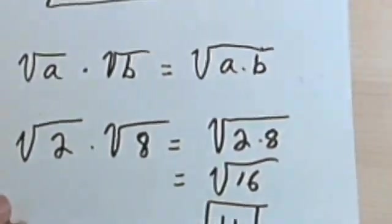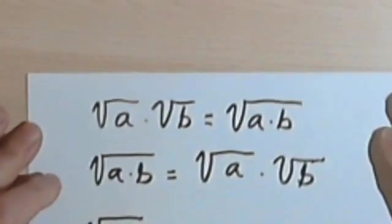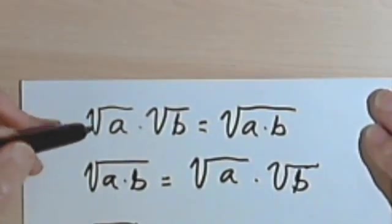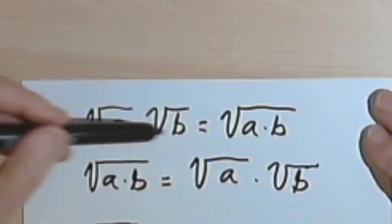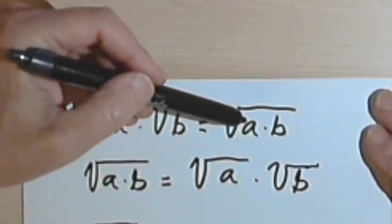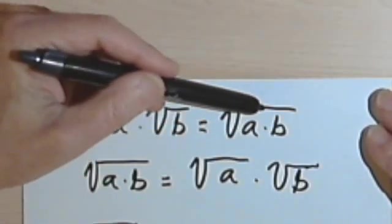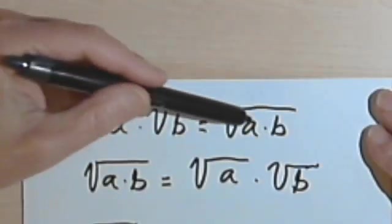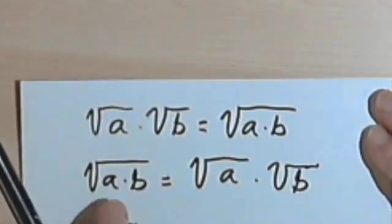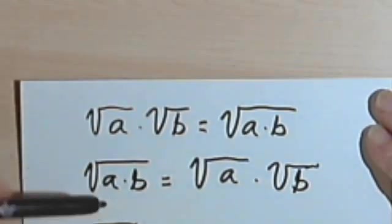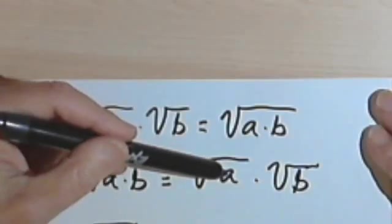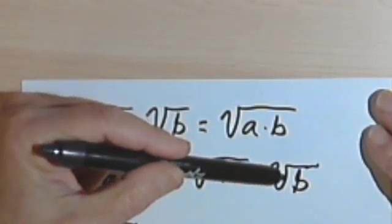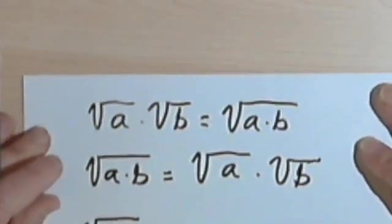Here's another example, one you might find even more useful. First we have to start with talking about the rule again. We have the square root of a times the square root of b equals the square root of a times b — that's our product rule. Now we have an equation, so we can write that equation in the reverse order. In other words, the square root of a times b equals the square root of a times the square root of b.